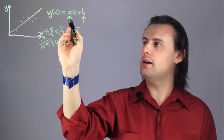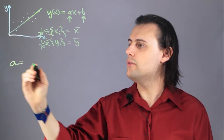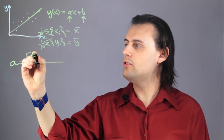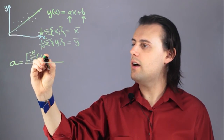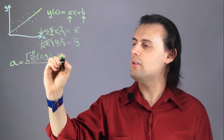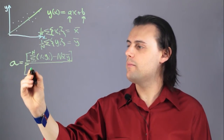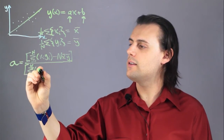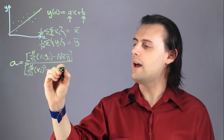Now that you have these, you can determine these coefficients using the following formulas. A is equal to, in the numerator, the sum from i equals 1 to n — where n is the number of data points — of x_i times y_i, minus n times the average in x times the average in y. This whole thing is divided by the sum from i equals 1 to n of x_i squared, minus n times x-average squared.